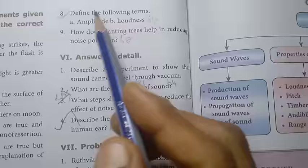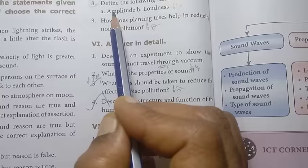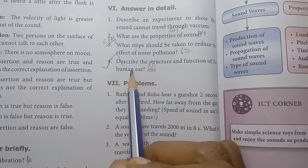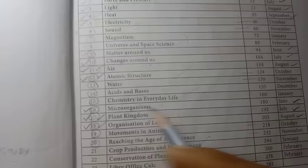Define the following terms: amplitude, loudness. In the questions, they give define, so know how to explain amplitude and loudness. Answer in detail: What steps should be taken to reduce the effect of noise pollution? This is a very very repeated question, so please give more importance. Describe the structure and function of the human ear is an important question.